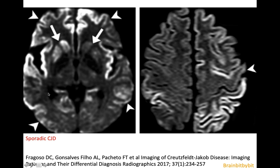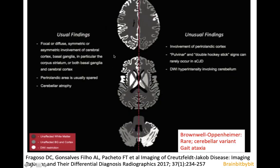In the sporadic form there is extensive cortical involvement, often asymmetrical, with sparing of the perirolandic area. In this drawing you can see a summary of the findings in sporadic Creutzfeldt-Jakob disease, with sometimes also cerebellar atrophy. If there's really restrictive diffusion in the cerebellum, you can think of the very rare Brownell-Oppenheimer variant — these patients usually present with gait ataxia. The pulvinar and hockey stick sign is more in favor of the variant than of sporadic CJD.